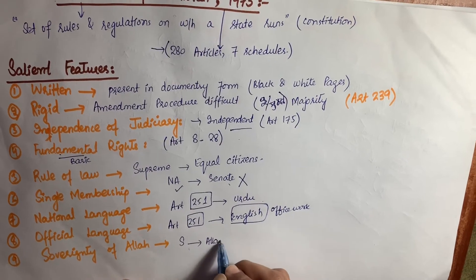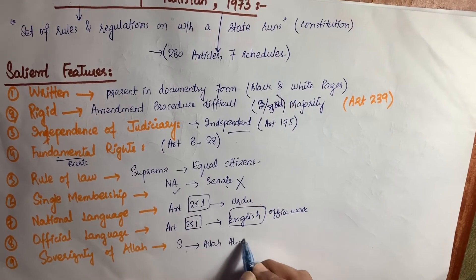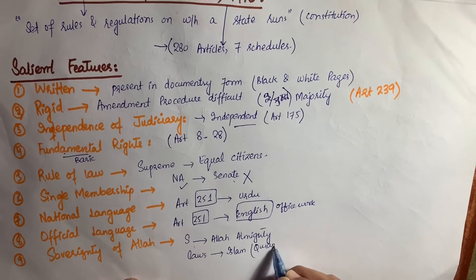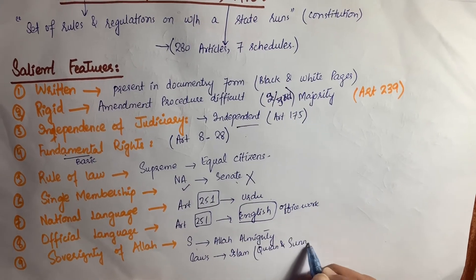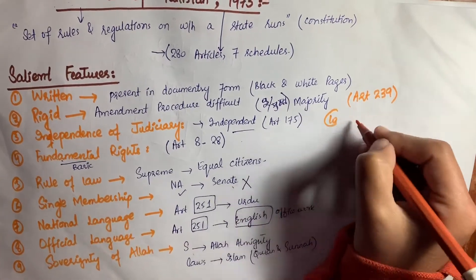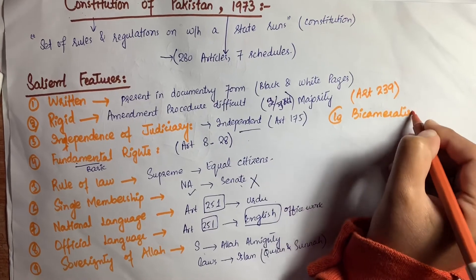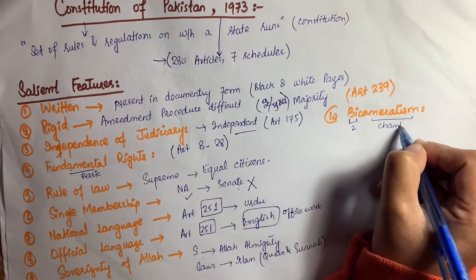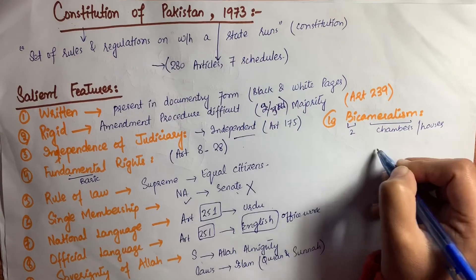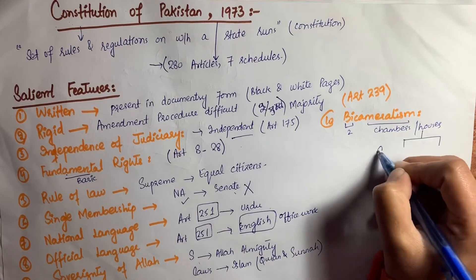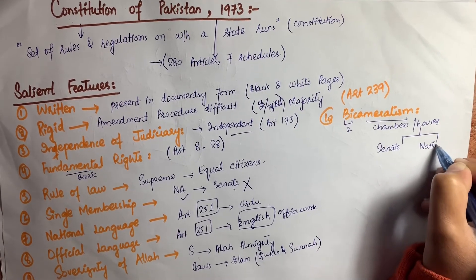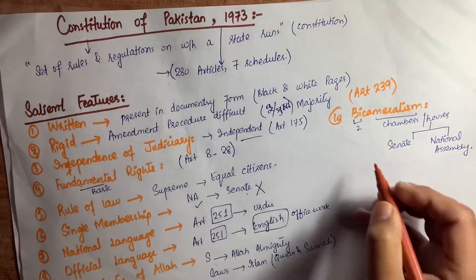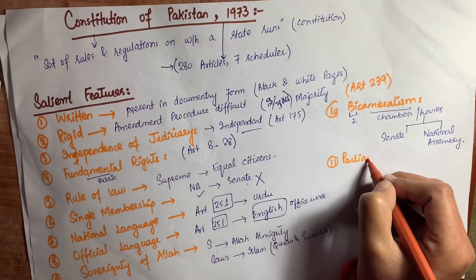The next feature is sovereignty of Allah. The Constitution of Pakistan says that sovereignty belongs to Allah Almighty and laws should be made according to Islam, meaning according to the injunctions of the Quran and Sunnah. Next is bicameralism — 'bi' means two and 'cameralism' means chambers or houses. There are two chambers of parliament: the Senate and the National Assembly.